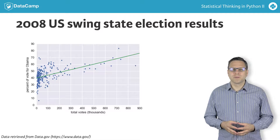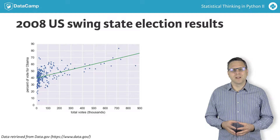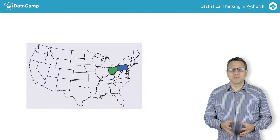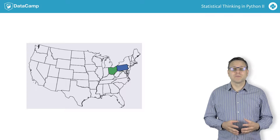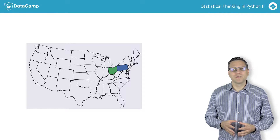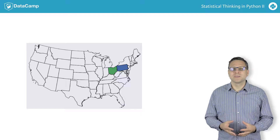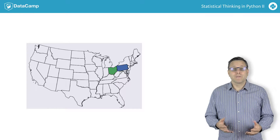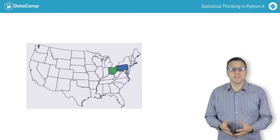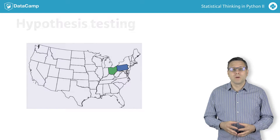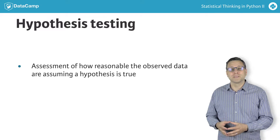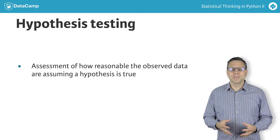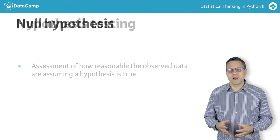Let's start by thinking about a simpler scenario. Consider the following: Ohio and Pennsylvania are similar states — they are neighbors, and they both have liberal urban counties and lots of rural conservative counties. I hypothesize that county-level voting in these two states have identical probability distributions. We have voting data to help test this hypothesis. We are going to assess how reasonable the observed data are assuming the hypothesis is true. The hypothesis we are testing is typically called the null hypothesis.